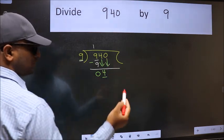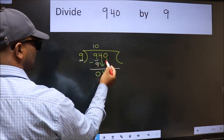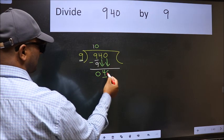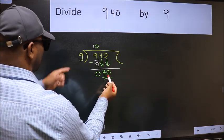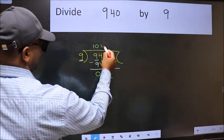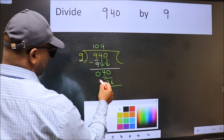And the rule to bring down the second number is we should put 0 here, then only we can bring this number down. Now 40—a number close to 40 in the 9 table is 9 times 4 equals 36. Now we should subtract.